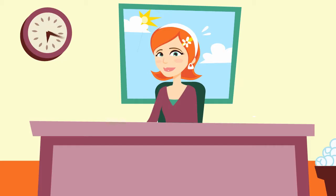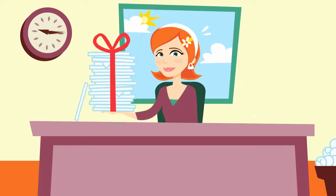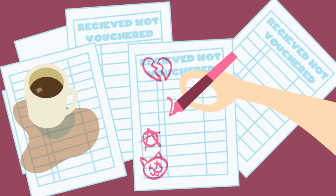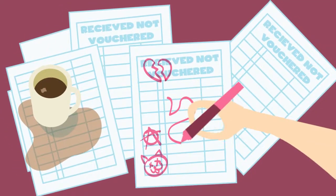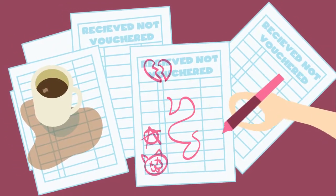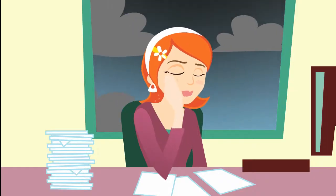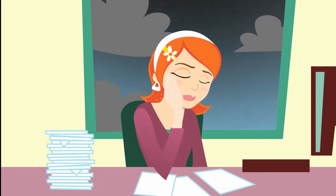Eventually, Claire's able to reconcile her accounts — apart from received, not vouchered. But that's her usual month-end defeat. Claire will need to make a provision to hit her deadline.